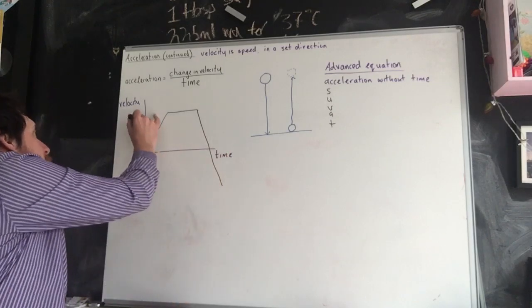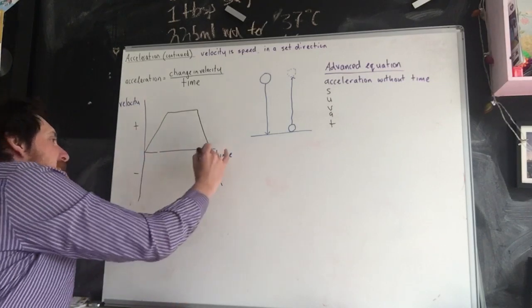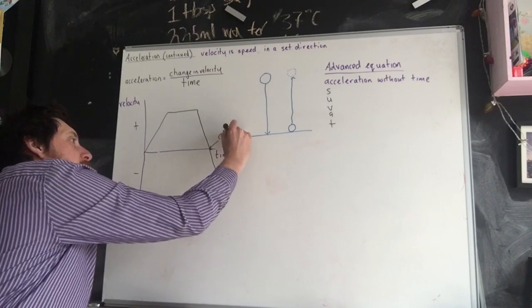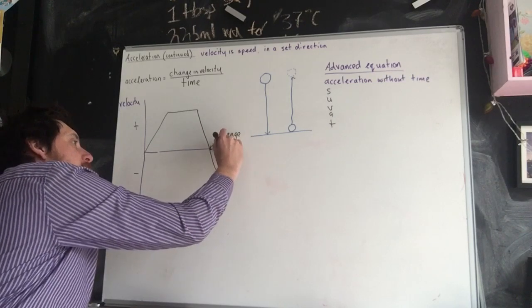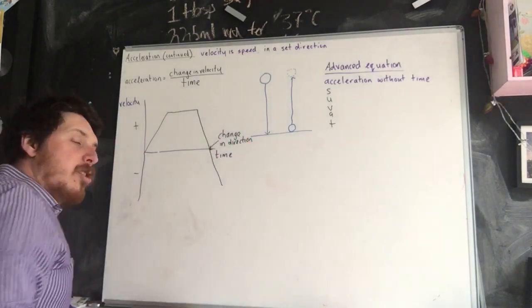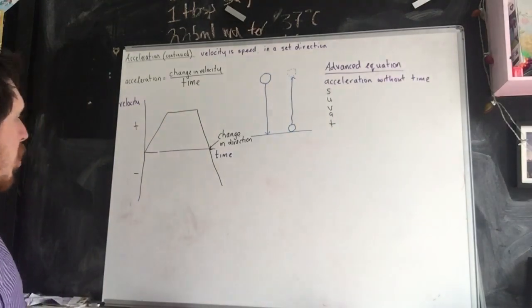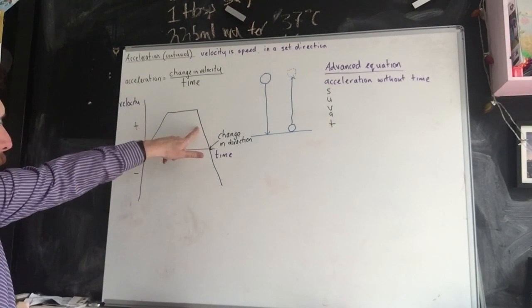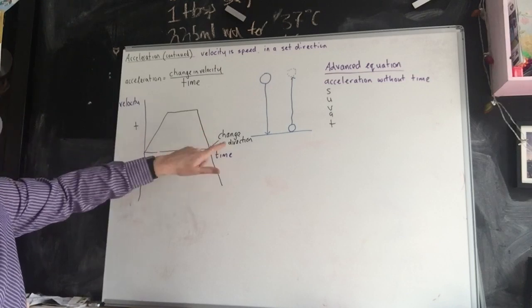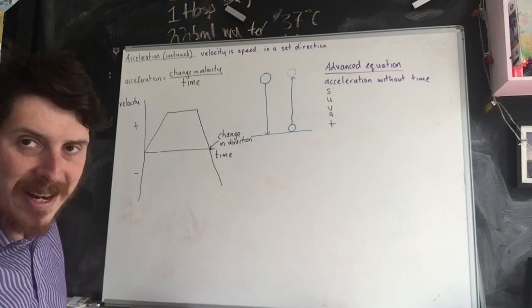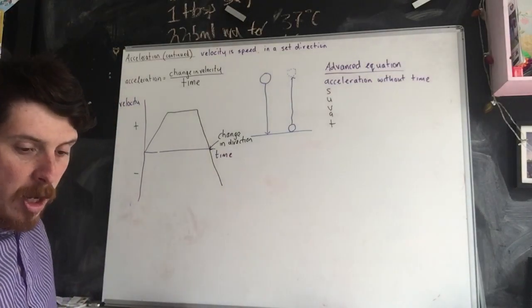Now here, because we've gone from positive velocity to negative velocity, this represents a change in direction. So for example, a car doing a U-turn would mean that the velocity has now become negative. So increase in velocity, velocity stays the same, decrease in velocity, change in direction there. And from here we've now got an increase in negative velocity.